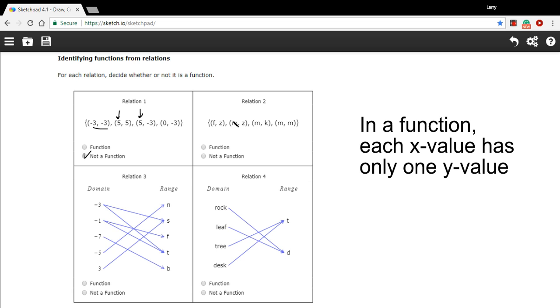Let's look at relation 2 here. We've got f and z, m and z, and that's fine. Those are two different x values, so they can have the same y value. What I really want to look for is doubles on the x, and here we go...